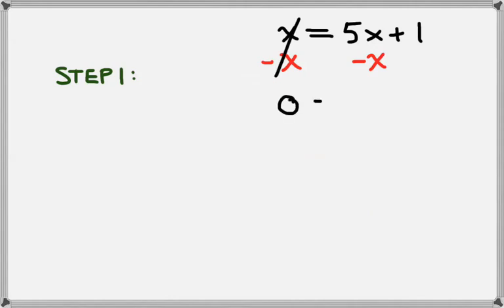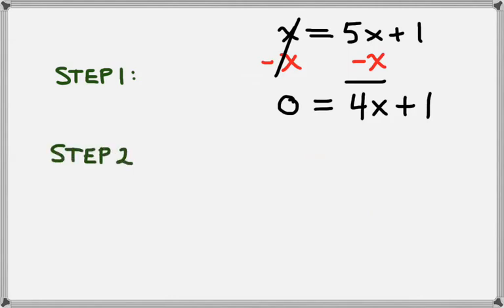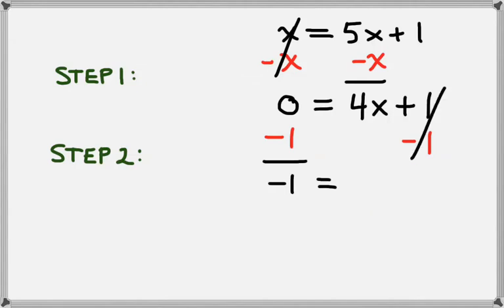On the left, those x's cancel, which leaves us with 0. And on the right, we have 5x minus x, which leaves us with 4x, and then we still have that plus 1. The next step is we want to get the 4x by itself, so we're going to subtract 1 from the right hand side, and we also need to do that to the left hand side. On the left, that leaves us with 0 minus 1, which is negative 1. And on the right, the 1 and the minus 1 cancel, so that just leaves us with 4x.